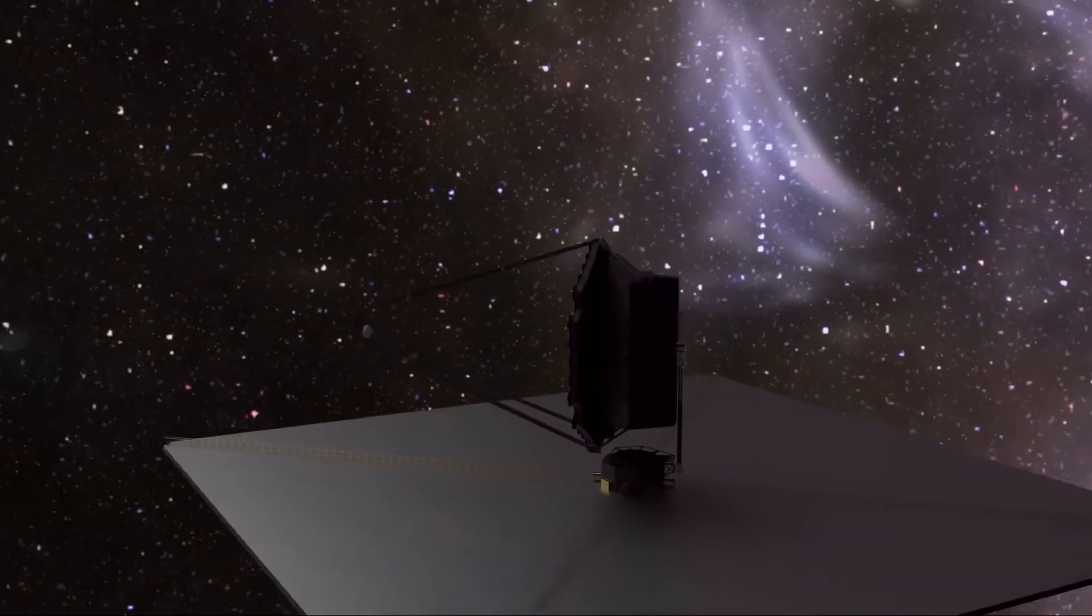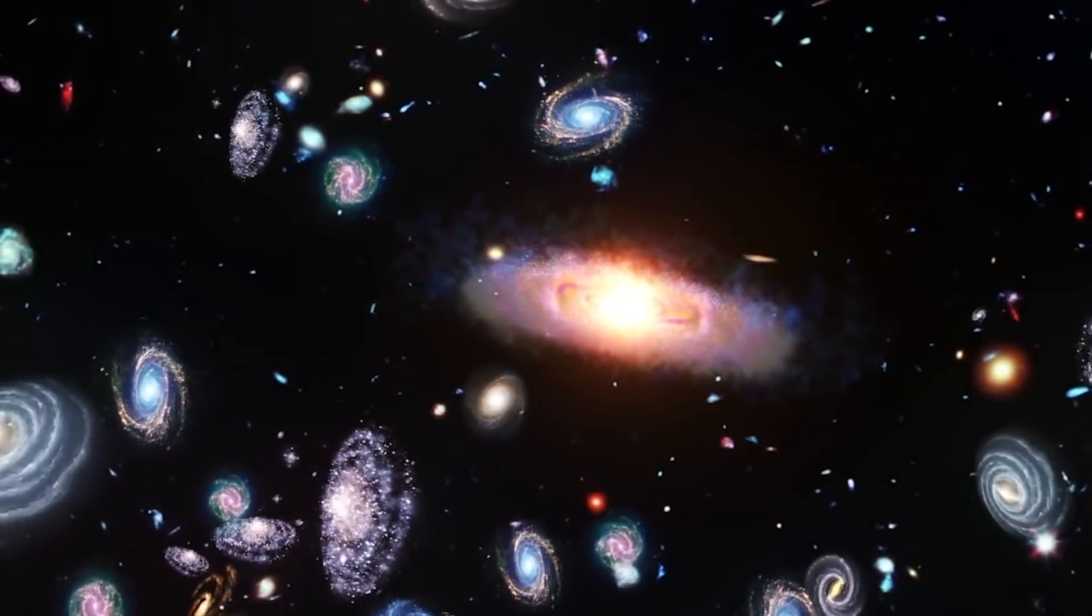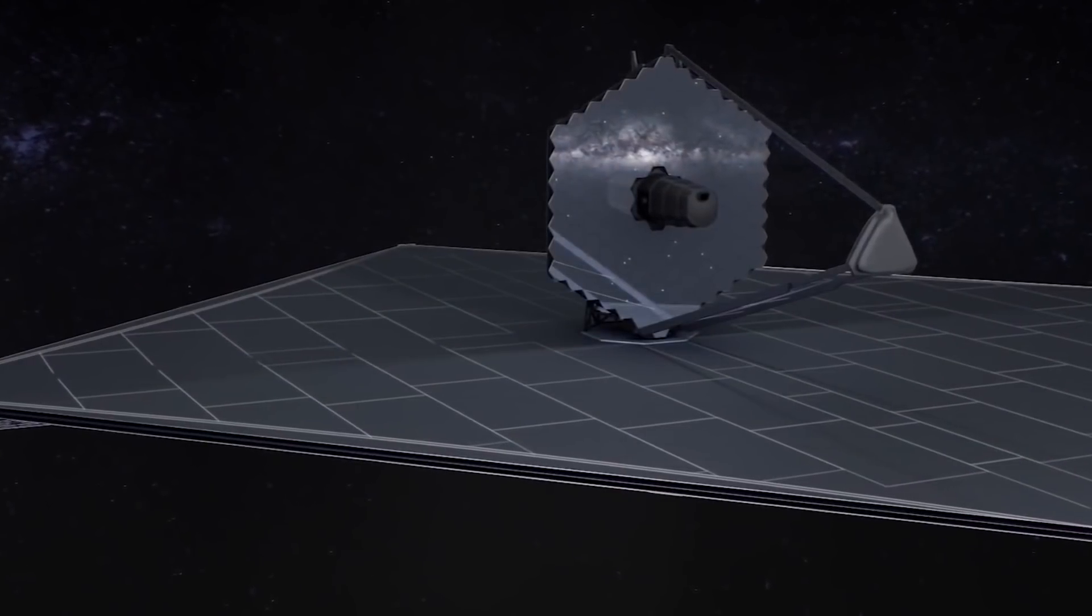Over its five-year primary mission, LUVOIR-A is expected to identify and study 54 potentially habitable exoplanets, while LUVOIR-B is expected to identify 28.